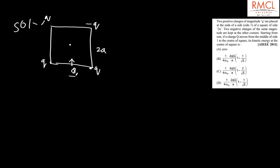If we find the potential energy at the middle point of side 1, the potential due to the two positive charges Q and Q is KQ divided by A — since the distance from each +Q corner to the midpoint is A — multiplied by 2. This is the potential at the midpoint due to charges Q and Q. Now we also need to find the potential at the midpoint due to the two negative charges minus Q.